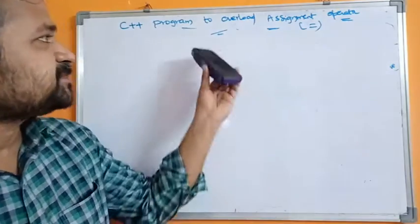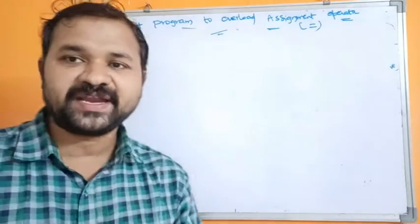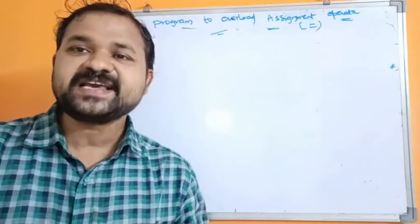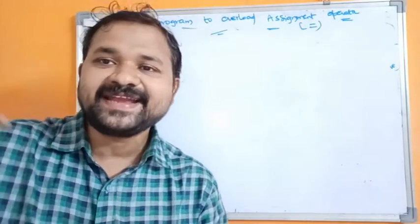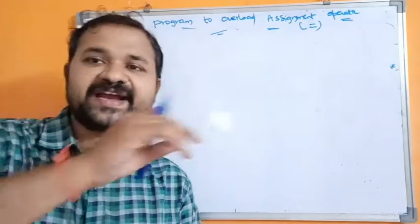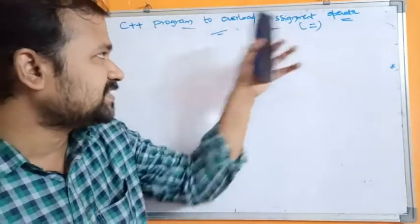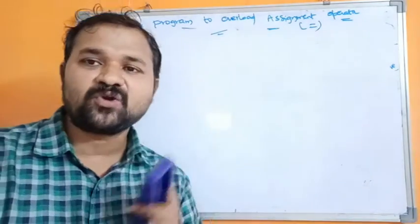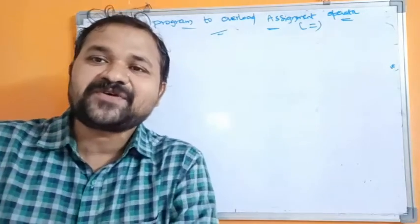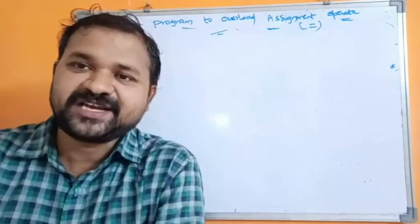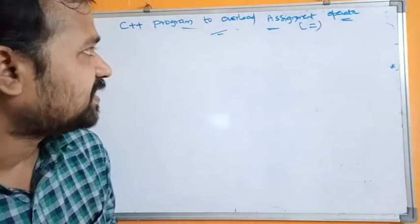Now let's see a C++ program to overload the assignment operator. Generally, by using the assignment operator we can assign a right-hand side value to a left-hand side variable. But now, with the help of operator overloading, we are assigning the content of an object to another object.